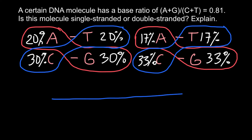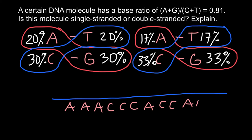For example, if a DNA is single-stranded, we may get different ratios. A single strand might have adenine, adenine, adenine, cytosine, cytosine, cytosine, adenine, cytosine, cytosine, adenine, adenine, and guanine. As you can see, there is no thymine at all — only one guanine, five cytosines, and six adenines. In single-stranded DNA, the same base ratios as in double-stranded DNA do not apply.